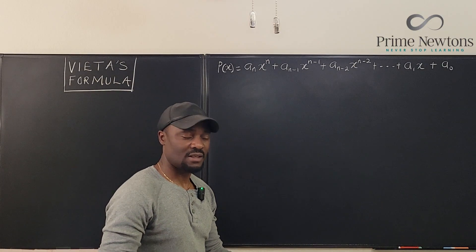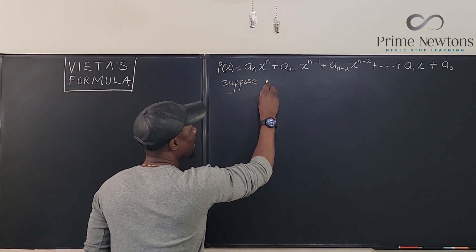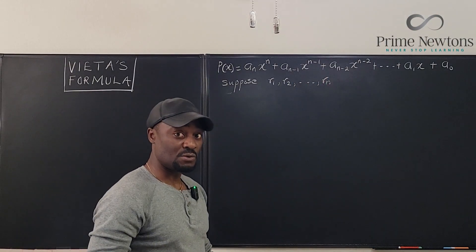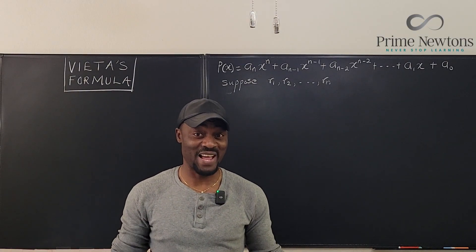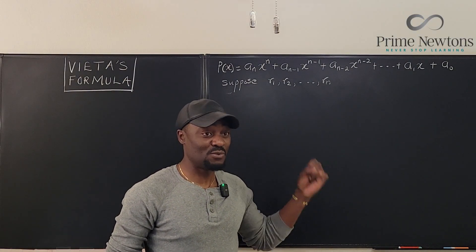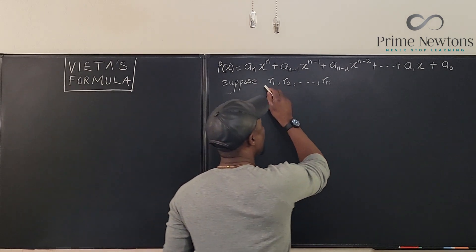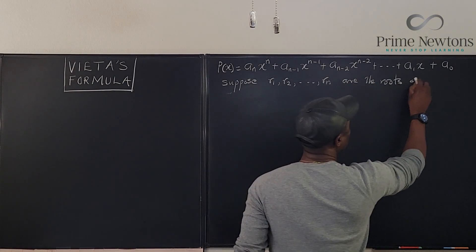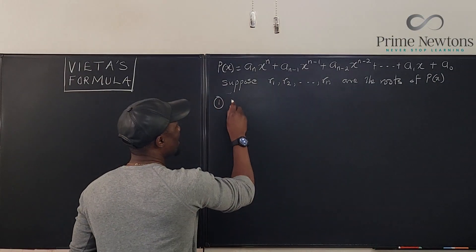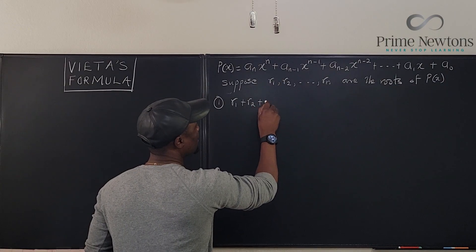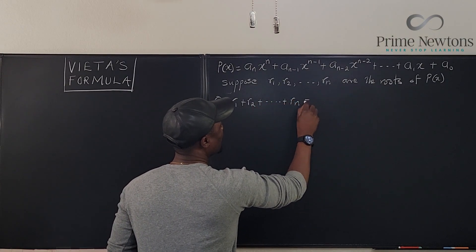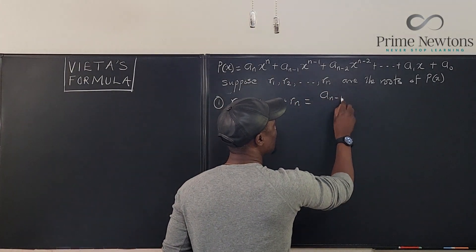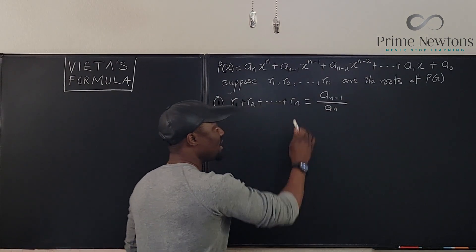Now, what does the formula say? Suppose r1, r2, all the way to rn, we have n number of roots. Now, it doesn't matter whether the roots are real or imaginary. Whether real, complex, or imaginary roots, it doesn't matter. What you do is all of these roots, the sum r1 plus r2 plus rn is the ratio of the second coefficient to the first, which is a n minus one over a sub n with a minus sign.